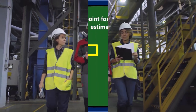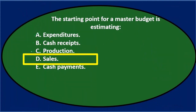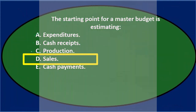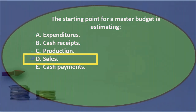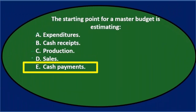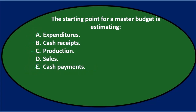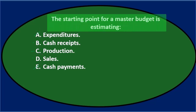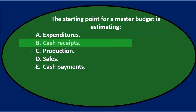Sales is the top of the income statement, so that would be somewhere up there. Cash payments is similar to expenditures — we'd need the receipts first before budgeting payments — so we can eliminate that. We'll keep B (cash receipts), C (production), and D (sales) and go through them again.